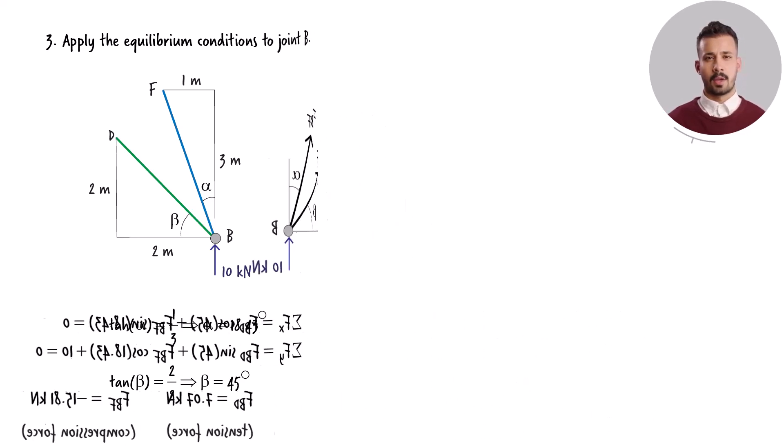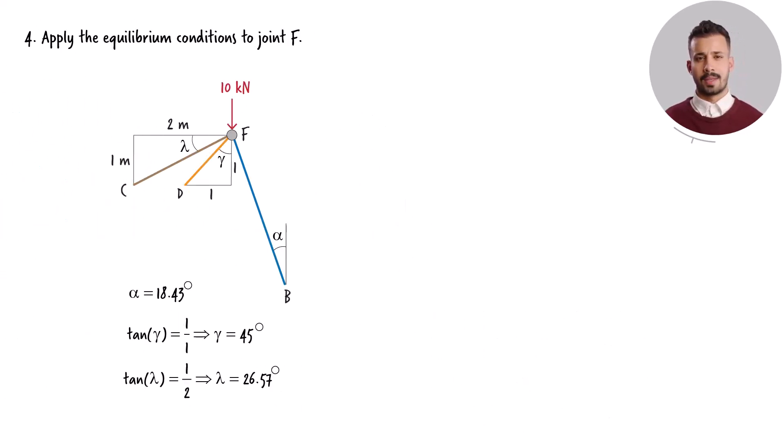Moving forward, we focus on joint F, which links together three members. Given that the force in member BF has been previously established, only two unknown forces remain at this joint. These unknown forces can be resolved using the equilibrium equations.